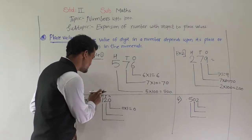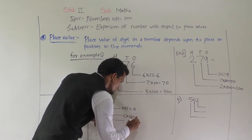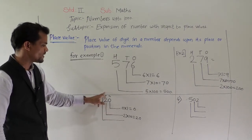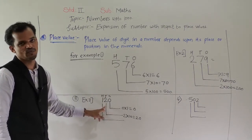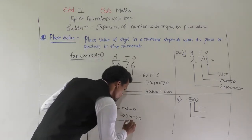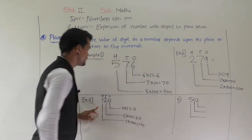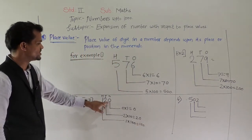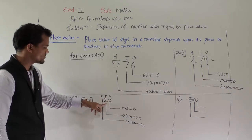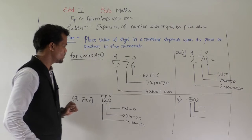So, 2 comes at tens place, so place value of 2 is 20. And 1 comes at hundreds place, so 1 times 100 is equal to 100. So here, place value of 0 is 0, place value of 2 is 20, and place value of 1 is 100.